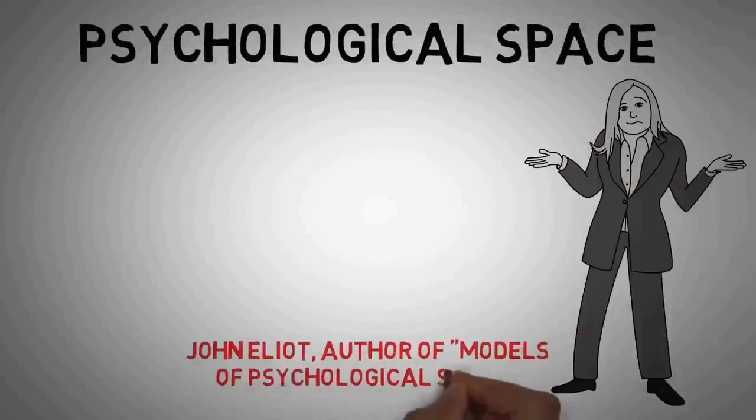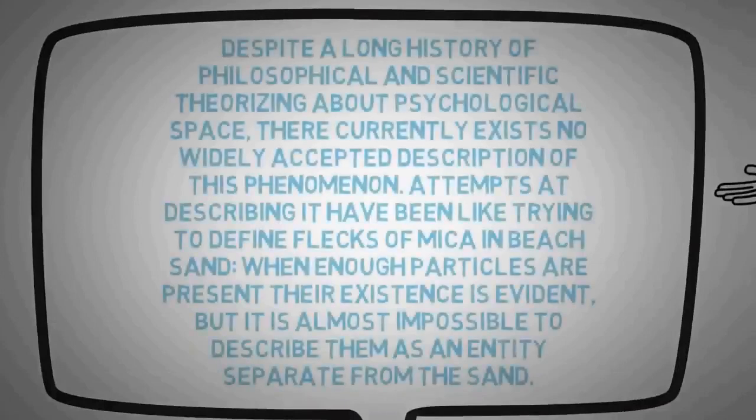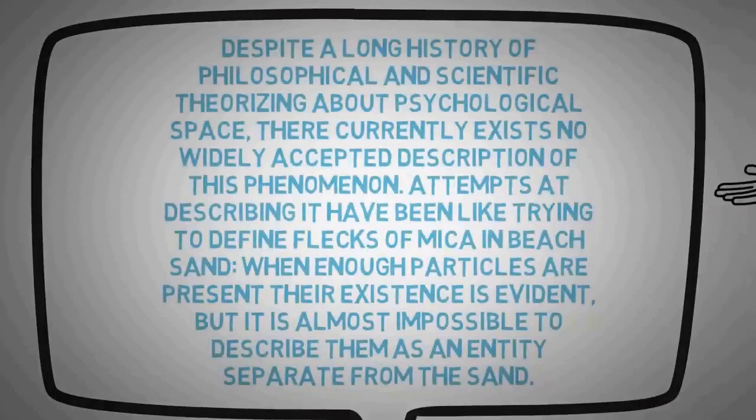John Elliott, author of Models of Psychological Space, says: Despite a long history of philosophical and scientific theorizing about psychological space, there currently exists no widely accepted description of this phenomenon. Attempts at describing it have been like trying to define flecks of mica in beach sand. When enough particles are present, their existence is evident. But it is almost impossible to describe them as an entity separate from the sand.